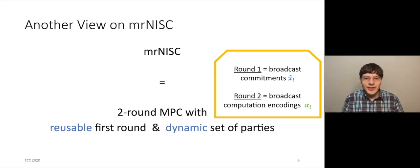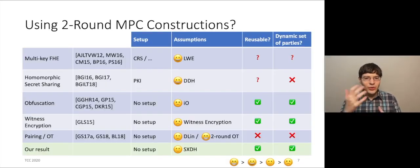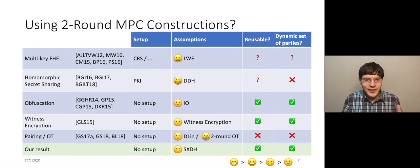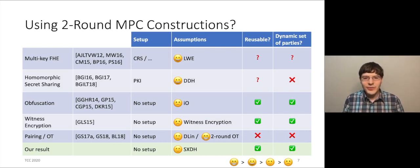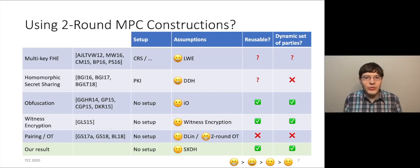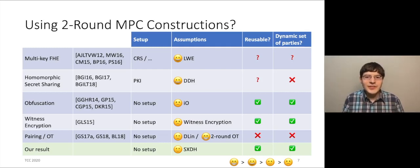This relation with two-round MPC leads us to think that maybe we can use existing two-round MPC protocols and tweak them to get MR-NISC. There are essentially five main lines of work. The first is based on multi-key FHE by Asharov et al. in 2012, which yields two-round MPC from LWE, a very standard assumption. The issue is that it requires a setup, and we would like to avoid setup for maximum flexibility. Furthermore, we don't know how to make it reusable and support a dynamic set of parties.